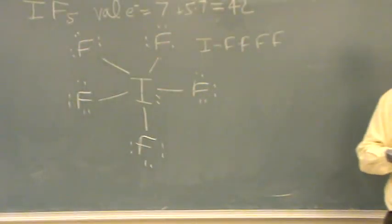And this will have six things around it. We're going to learn this is called an octahedral shaped compound, once you get to VSEPR.